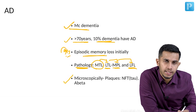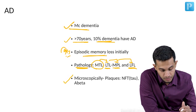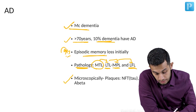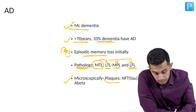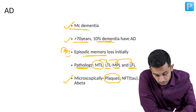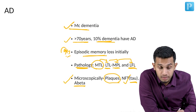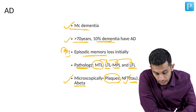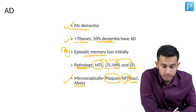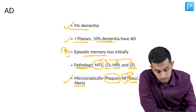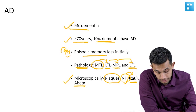Microscopically, what we see in Alzheimer's disease patients when we do the autopsy and take out the sample is that we see plaques which contain mainly tau and amyloid beta. These are collectively called neurofibrillary tangles, which are rich in tau filaments — mainly hyperphosphorylated tau.